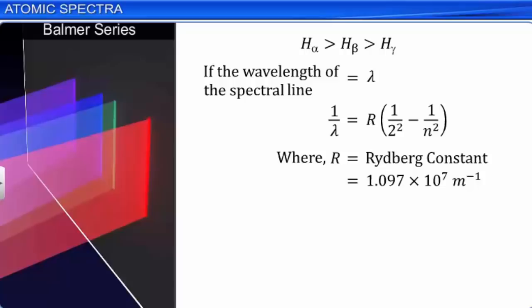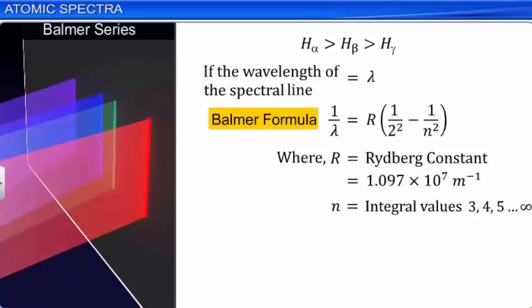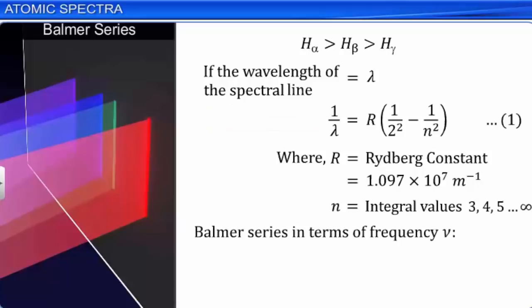The Balmer series can also be written in terms of frequency ν. We know that the velocity of light c = νλ, which implies 1/λ = ν/c. Substituting in equation 1, we get ν = Rc × (1/2² − 1/n²).